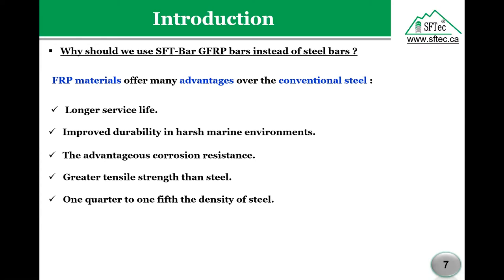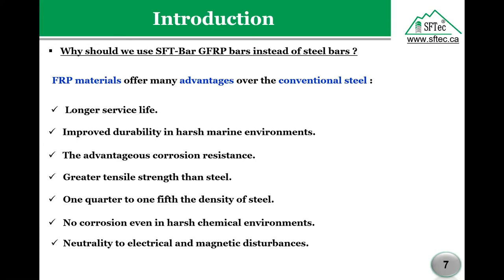Even though it's stronger than steel, GFRP is one-fifth the weight of steel, which makes it easier to work with, safer, and faster. The fact that it is corrosion-proof makes it perfect for chemical environments such as mining industries and water purification stations. Finally, it is neutral to electric and magnetic disturbance, making it ideal for applications like airports, military applications, and MRI rooms in hospitals.